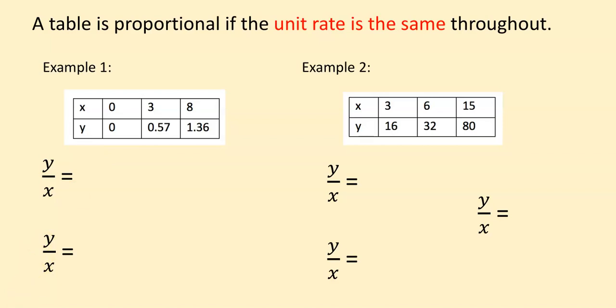In this first example, example one, you notice that the first point is zero zero. Zero zero you cannot use to find the unit rate, so we're going to look at the second point, 3, 0.57, and I'm going to start by labeling this is x and then this value is y.